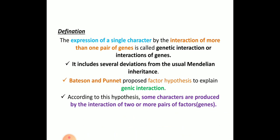Mainly, interaction of genes is nothing but the deviation of Mendelian inheritance. Bateson and Punnett proposed the factor hypothesis to explain genetic or genic interactions. According to this hypothesis, some characters are produced by the interaction of two or more pairs of factors — that is, genes. This is how they explained the interaction of genes.